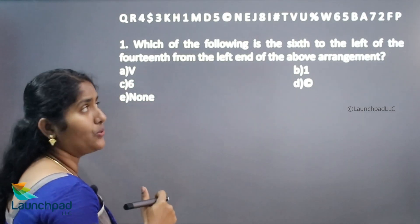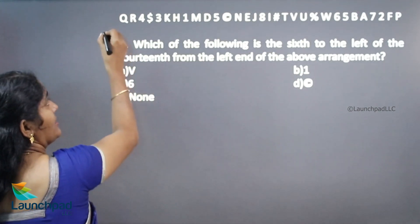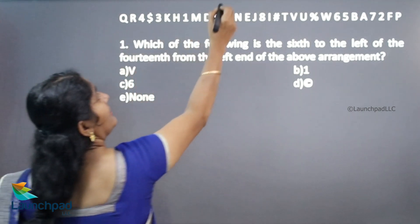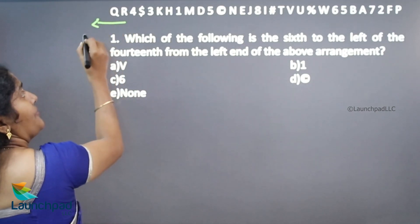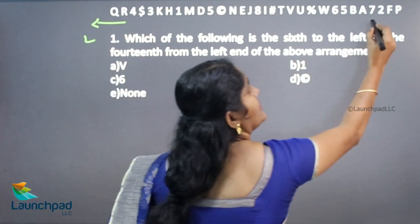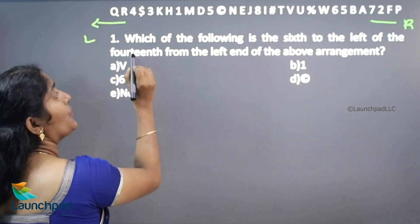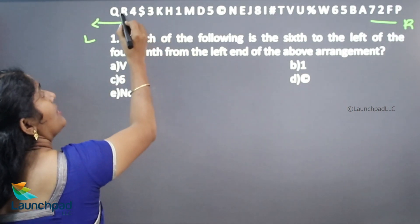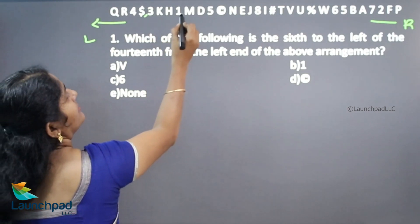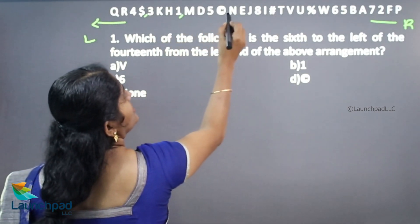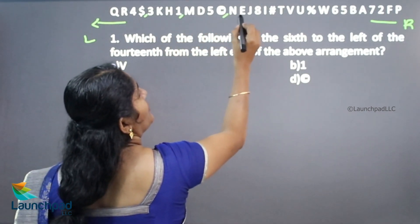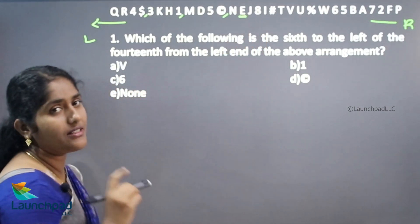What we can do? Left end is our left end. This is the left end and this is our right end. What is 14th from the left end? 4, 8, 12, 13, 14. 14th element is E.